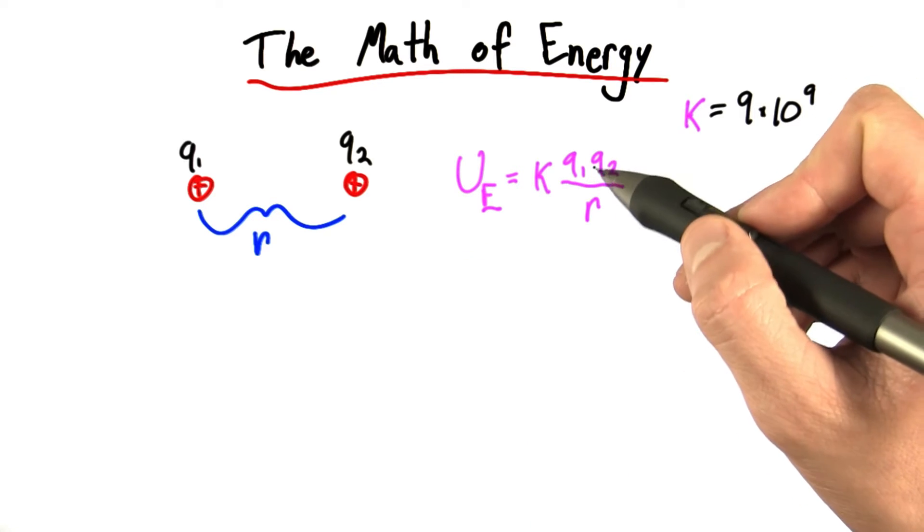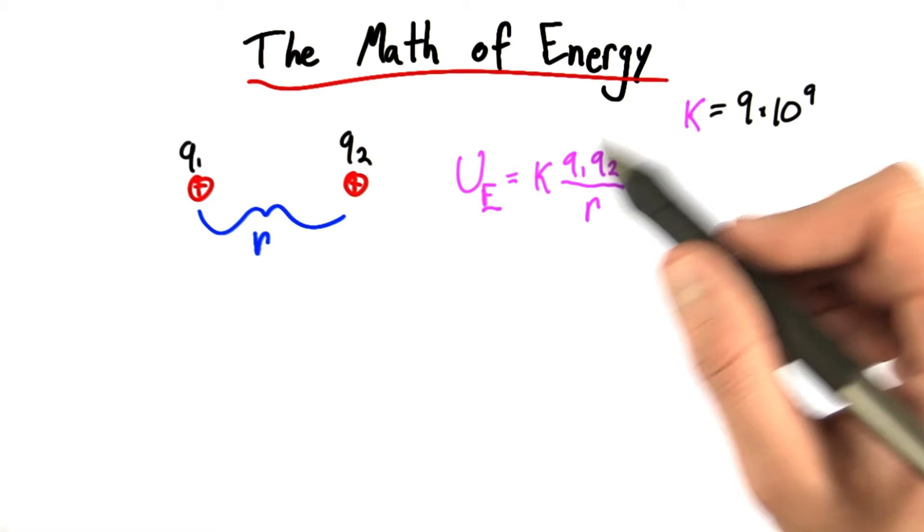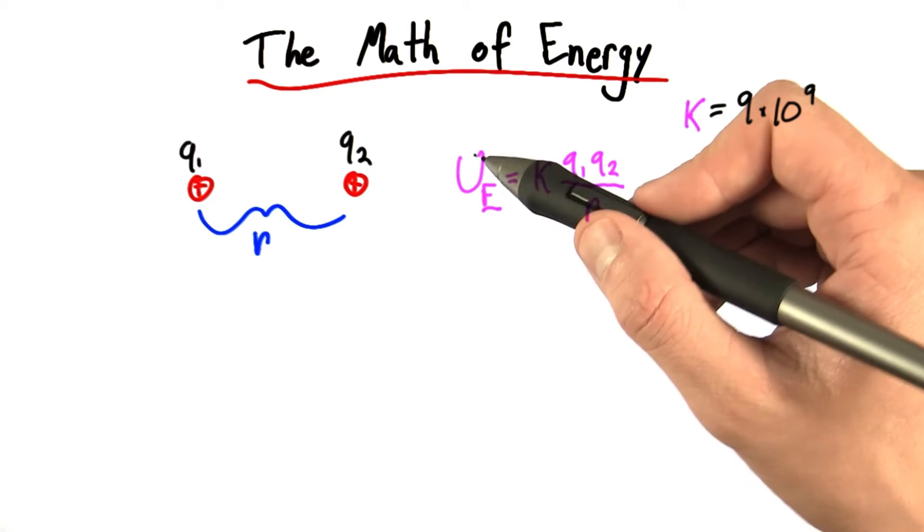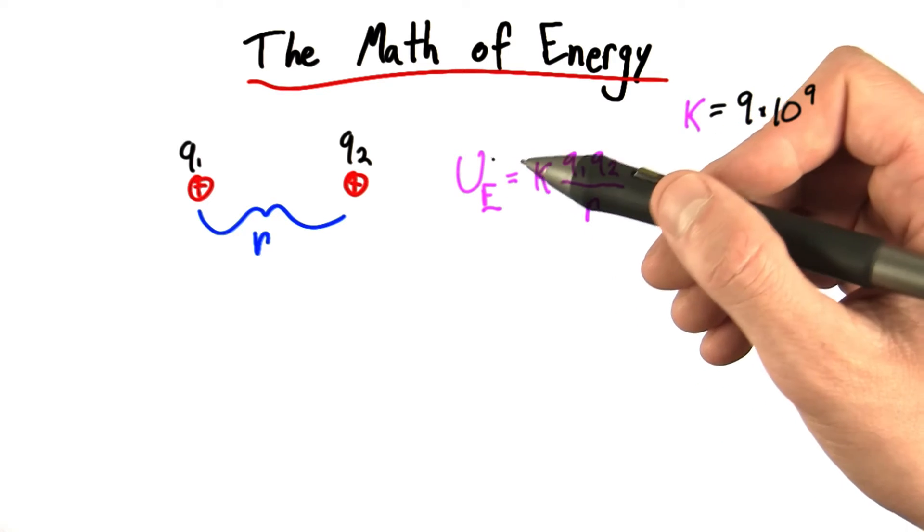What this equation tells us is that if the charge is bigger, either of these charges, the potential energy increases proportionally. If the distance of separation is bigger, the potential energy decreases proportionally.